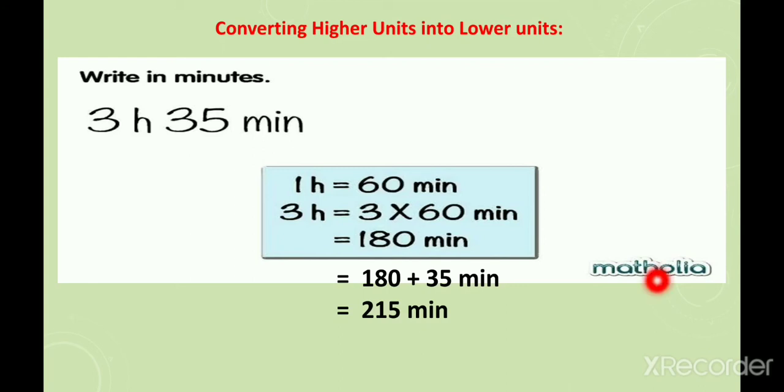Let's understand with this example: converting the higher unit into the lower unit. Write 3 hours 35 minutes in minutes. In 1 hour, 60 minutes are there, so in 3 hours, 180 minutes. Then add the remaining 35 minutes and it becomes 215 minutes. Here you converted hours into minutes, so you multiplied by 60.